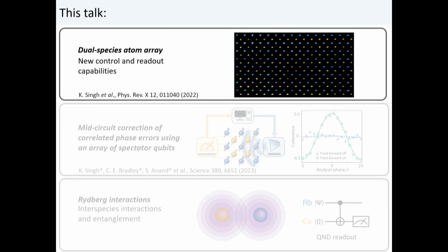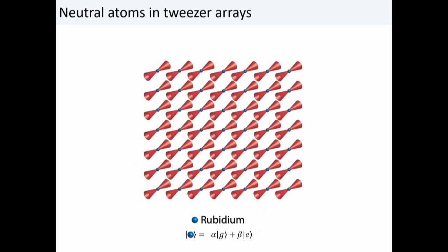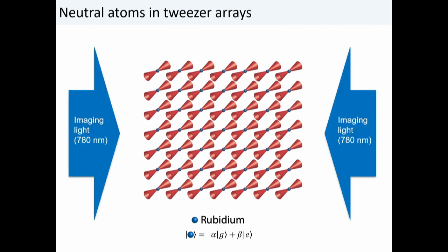To understand why we want two elements, let's look at how atom arrays are typically operated. When we want to get quantum information from a rubidium atom array, we shine what's called the motional or D2 line of rubidium at 780 nm on the atoms. This causes all atoms to fluoresce, giving single-site detection, but it has rather disastrous consequences for coherence — if you're using hyperfine qubits, it destroys all the coherence. So if you want to do quantum non-demolition measurements or repeated measurements, it's very challenging.